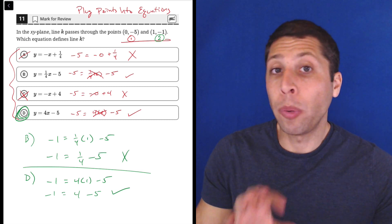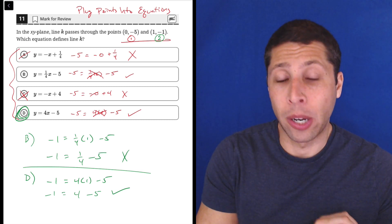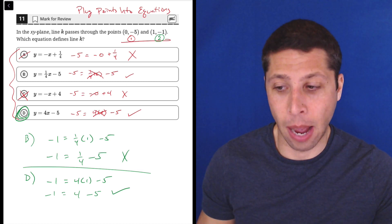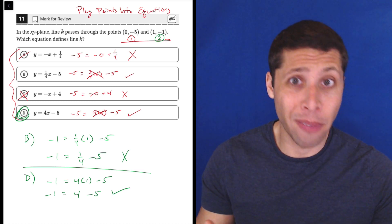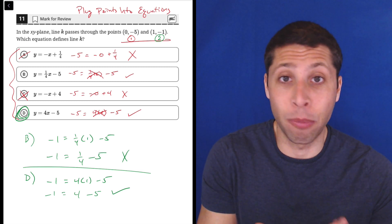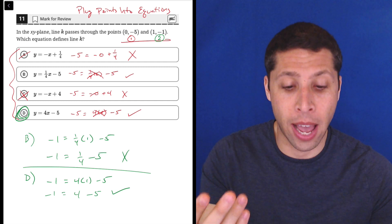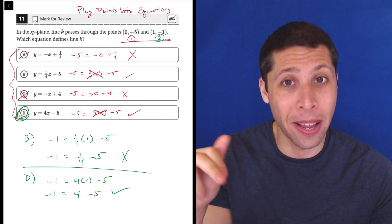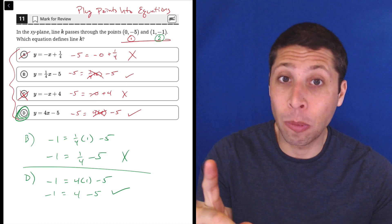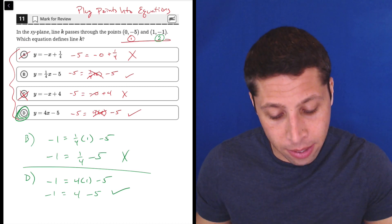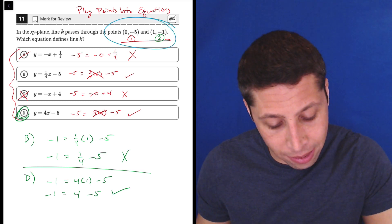Again, I'm showing you more work with this plug points into equations strategy than I probably would have done myself on the actual test. I'm just trying to show you what goes on in my head. But the benefit of having 0 and 1 as x is that it's not a lot of work. You can do a lot of that mental math in your head. But the way that I think they want you to do this, and I'm curious - you can comment if I'm right...